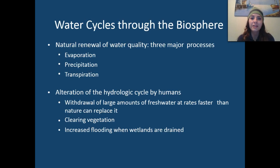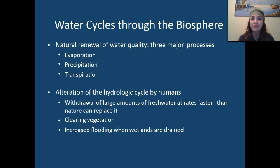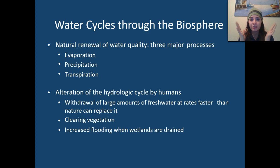The first cycle we're going to look at in depth is the hydrological, or water cycle. There is a natural renewal of water quality, and there are three major processes that contribute to this. We have evaporation of water — if you spread water on your hand, eventually it's going to evaporate back into the atmosphere. We have precipitation, which occurs in the form of rain, snow, sleet, or hail. And then we have transpiration — plants transpire through their stomata. Water goes up through the roots into the vascular system of the plant, the stomata open, and it releases water in the form of water vapor. We call this process transpiration.